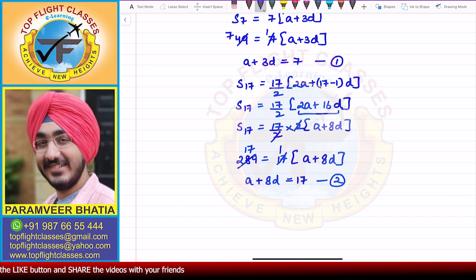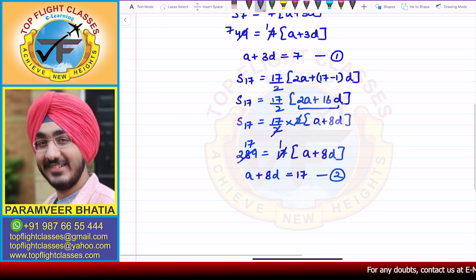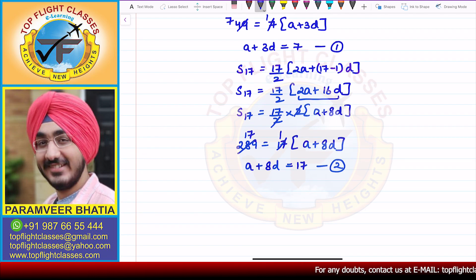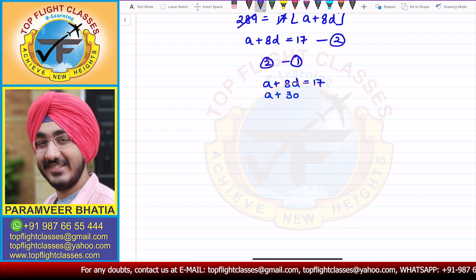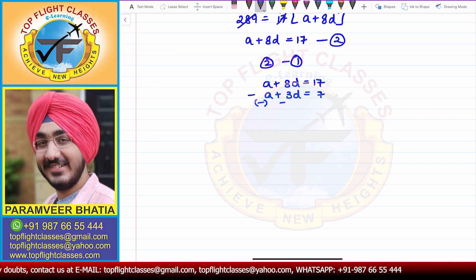So here first equation was a plus 3d is 7. Second equation is a plus 8d equals 17. So clearly this is a pair of linear equations in two variables where the two variables are a and d. So clearly we can eliminate a just by subtraction. So we do 2 minus 1. So from here I get a plus 8d equals 17, and a plus 3d equals 7.